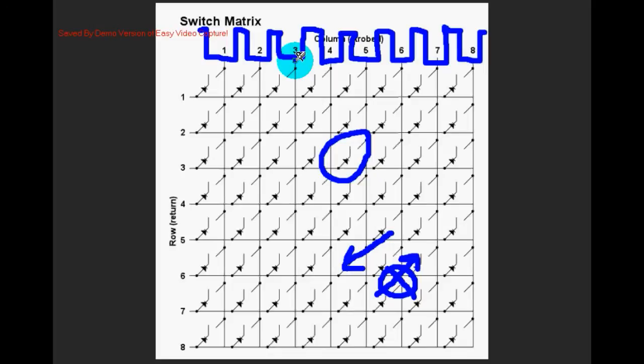When a column is strobed and one of the switches closes the diode allows current to flow in that direction.